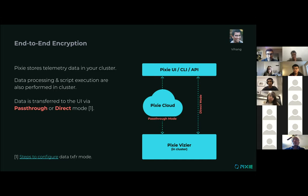To address that challenge and simplify the firewall configuration, we built a way for the Pixie cloud to proxy the script results. This is what we call pass-through mode, and this pass-through mode is a convenience method where Pixie cloud is just proxying the data between the cluster and the client. The data isn't persisted anywhere in the cloud — it's just a proxy for the data.